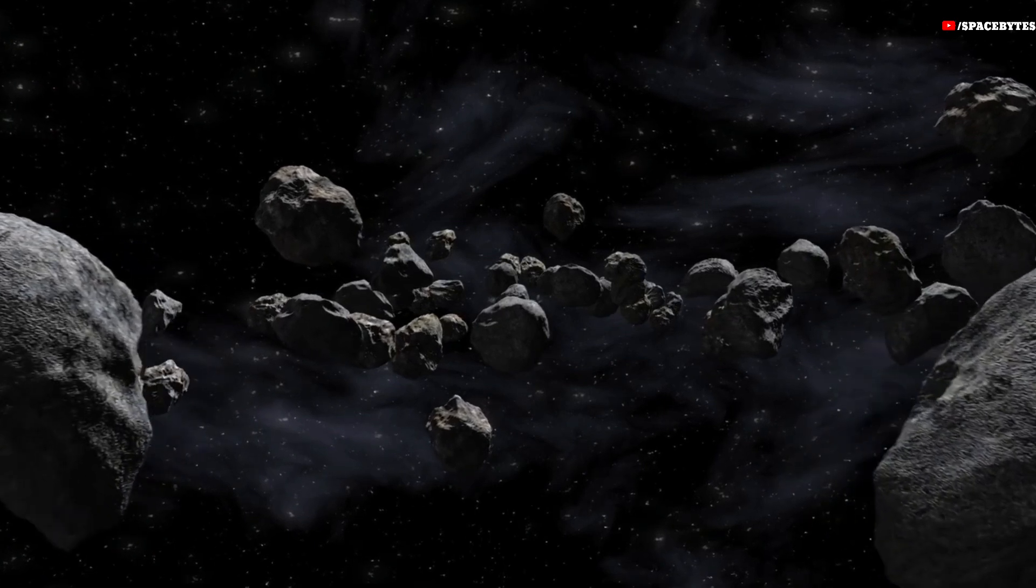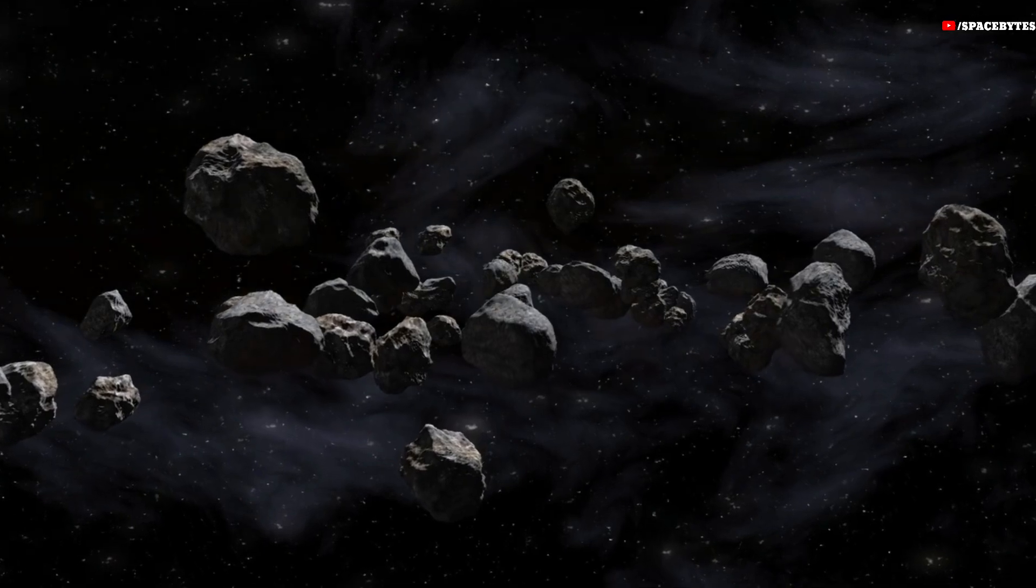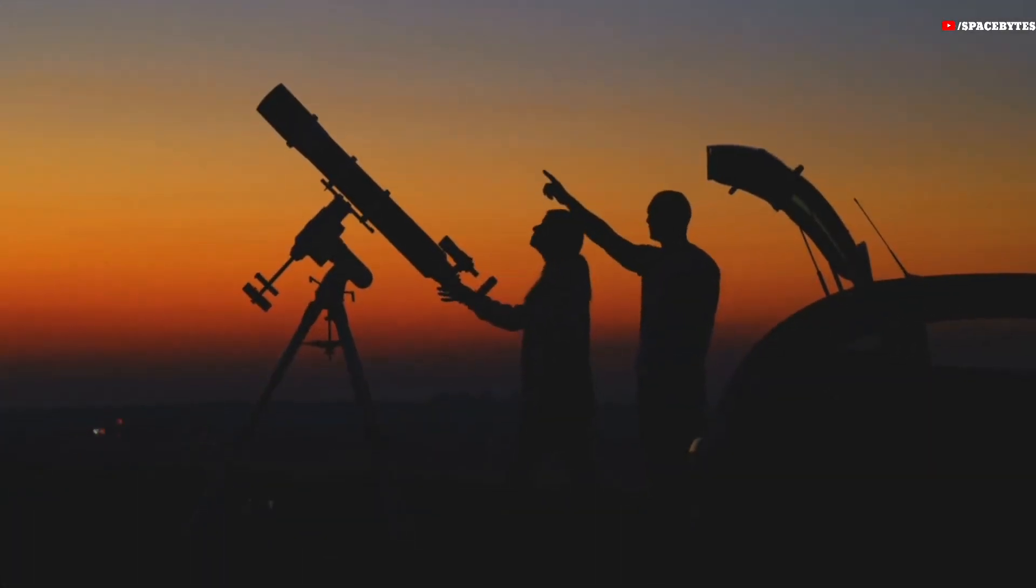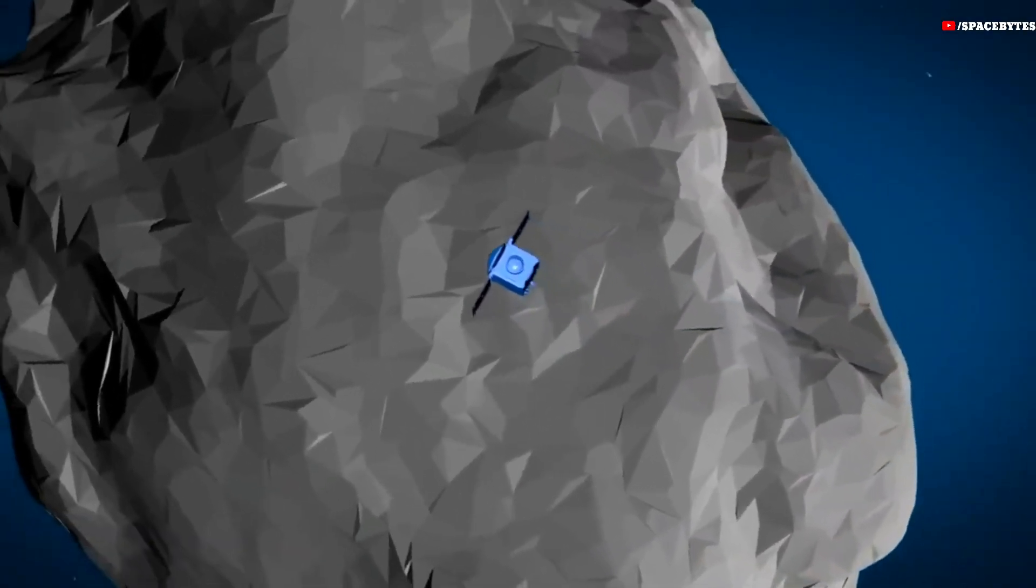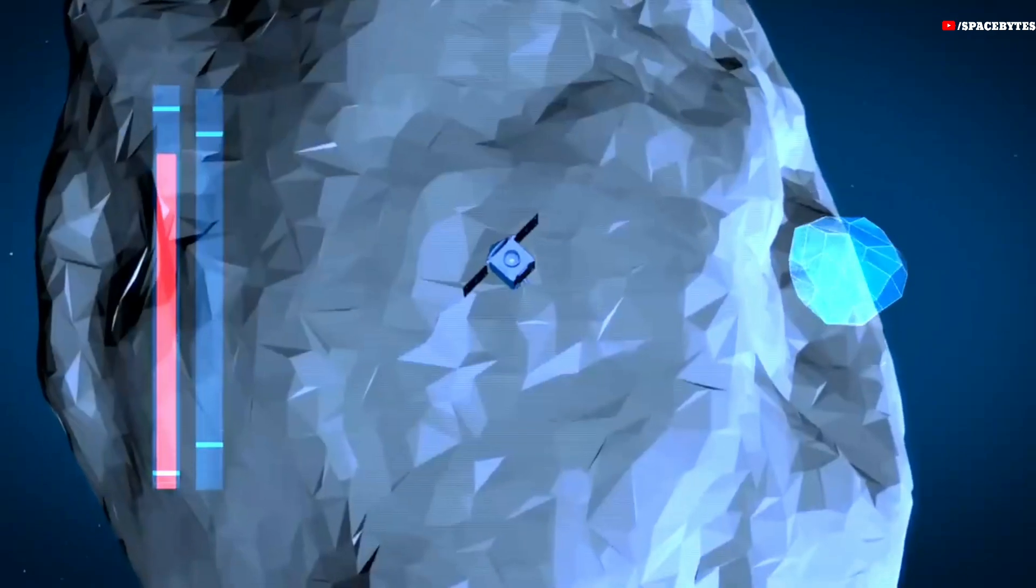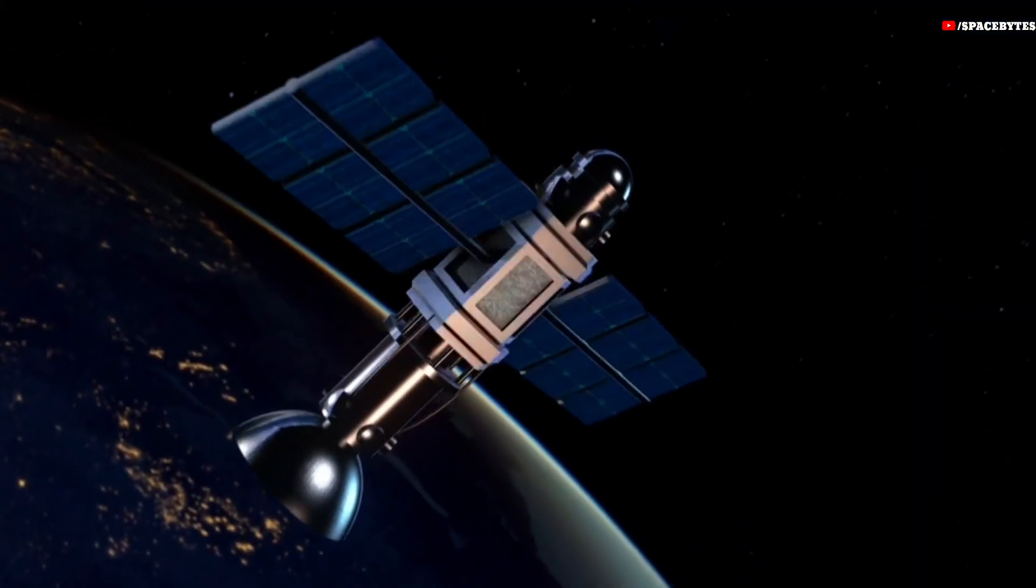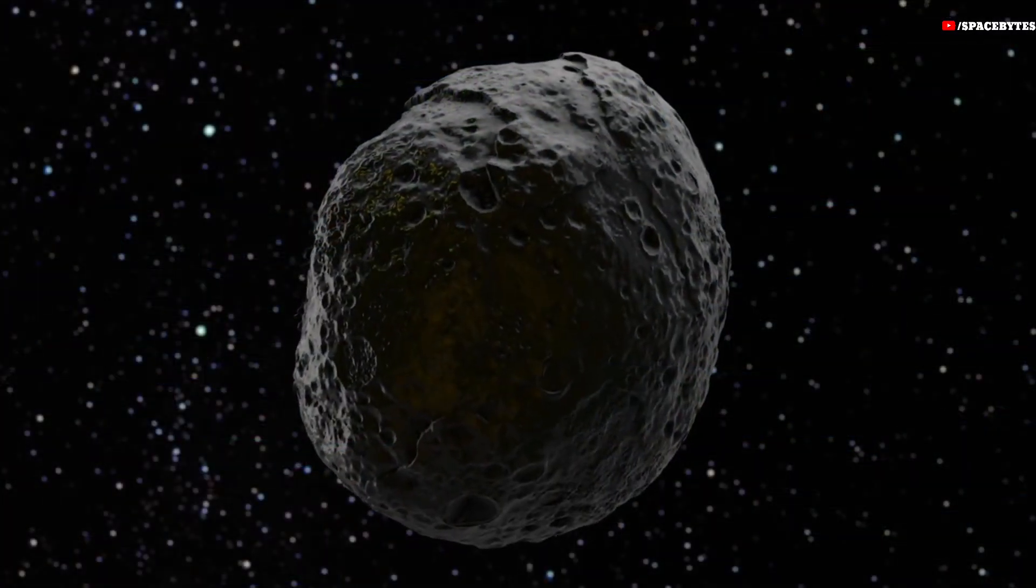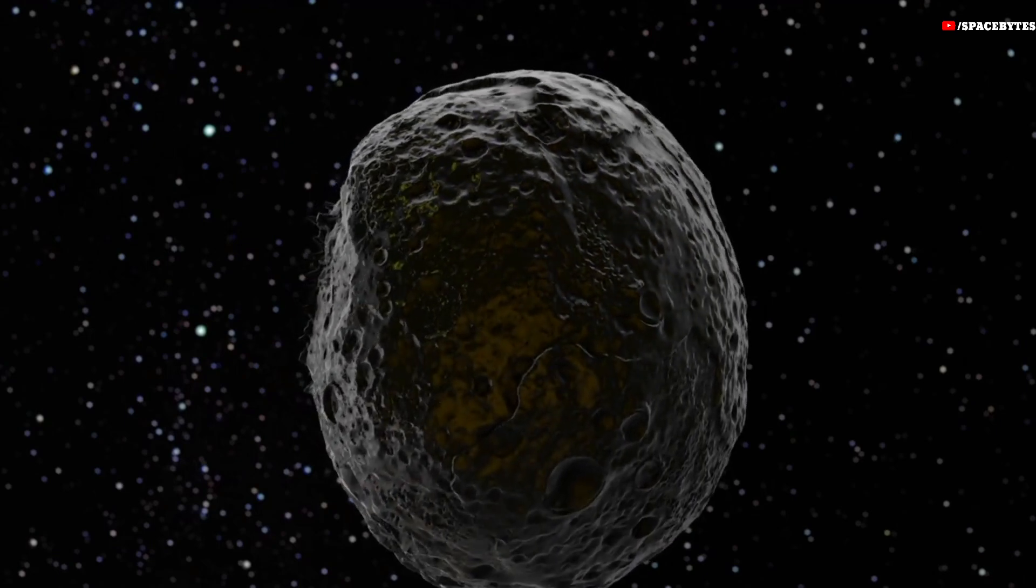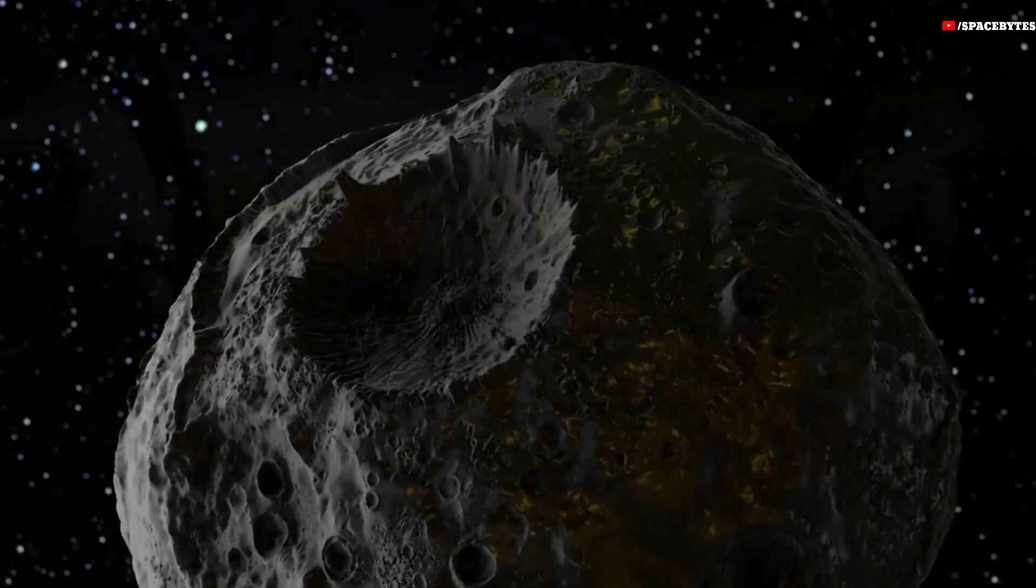2020 BX12 is a binary asteroid of the Apollo group, classified as a potentially hazardous object. It was first observed on January 27, 2020. Soon, a satellite orbiting the asteroid was also discovered. With a diameter of about 70 meters, the satellite is less than half the size of the primary component of this binary system. NASA JPL has classified 2020 BX12 as a potentially hazardous asteroid due to its predicted close passes with Earth.